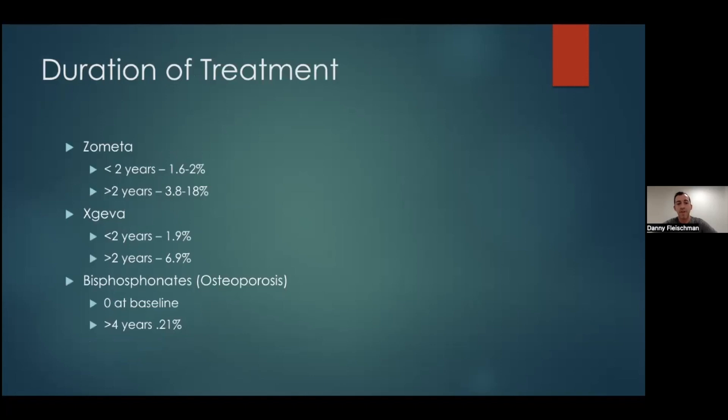What's also important in evaluating patients is how long they've been on the medication. And you can see with Zometa and Xgeva, both which are given for metastatic disease, that two-year mark is very critical. A patient who's been on it for less than two years has about a 2% chance of developing osteonecrosis. Well, once they've passed that two-year mark, they have anywhere from a 4% to 18% risk of developing it. And you can see in patients on bisphosphonates for osteoporosis, at baseline or even less than four years, they have a very, very low risk, close to zero. And even greater than four years, the risk only jumps up to about 0.21%, which is relatively low.